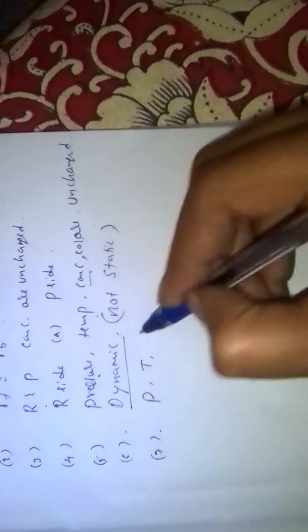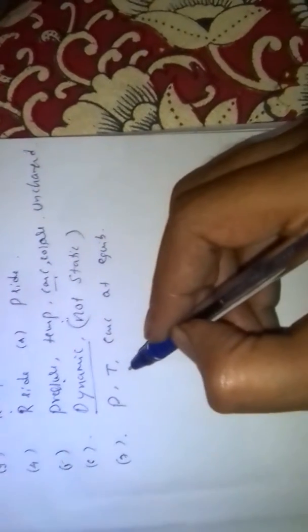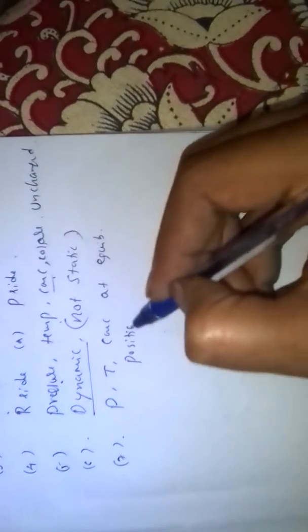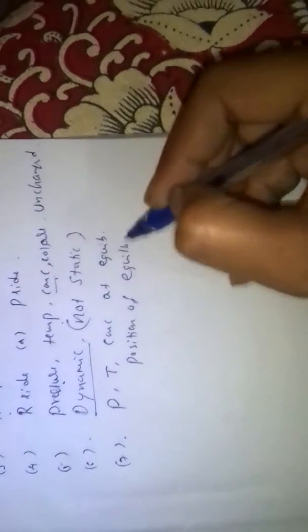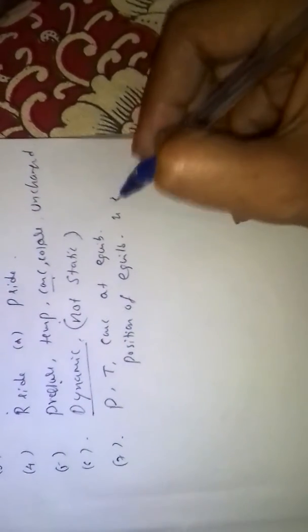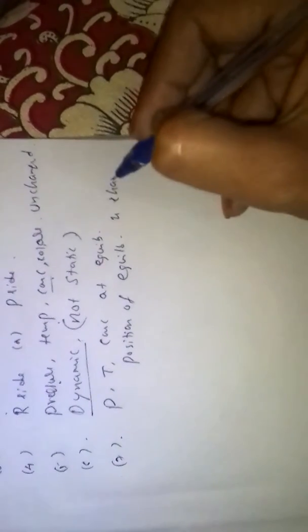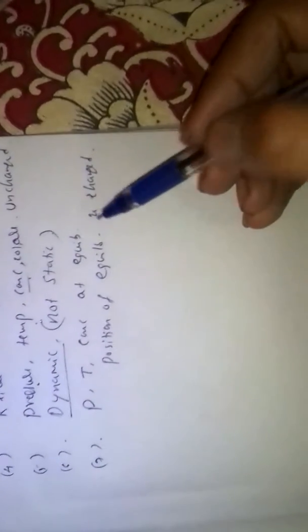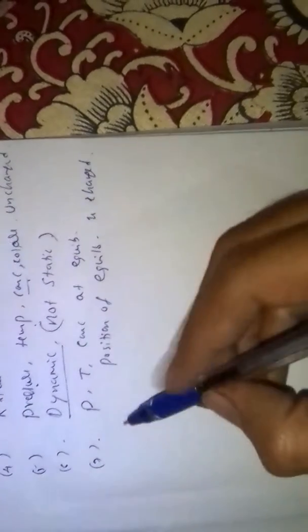If we change pressure, temperature, or concentration at equilibrium, then the position of equilibrium is also changed. How the position of equilibrium changes is explained by Le Chatelier's principle.